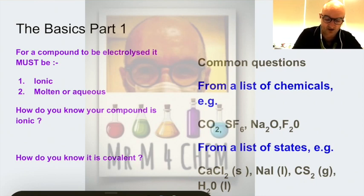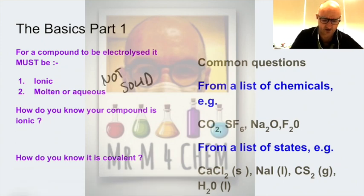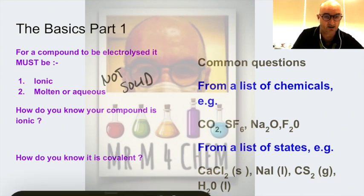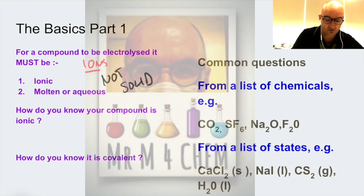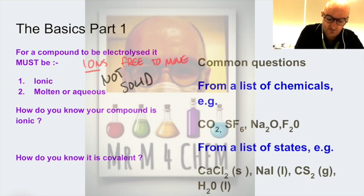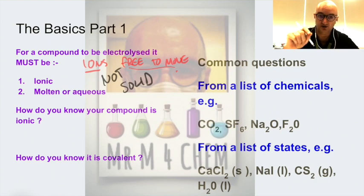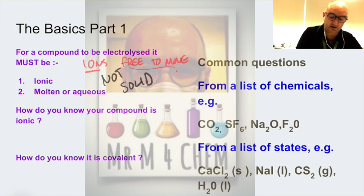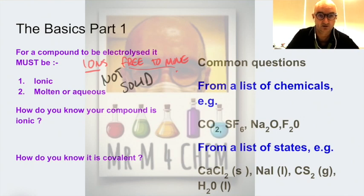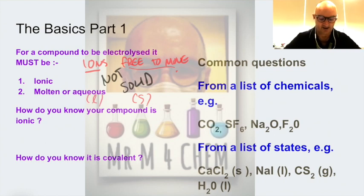For a compound to be electrolyzed it must be ionic, and it must be molten or aqueous — not solid. Solids will not electrolyze because the ions must be free to move. The ions can only be free to move if they are in the liquid state — which we call molten — or if they are dissolved — which we call aqueous. If it's solid, it cannot be electrolyzed even if it is ionic; liquid and aqueous states we can.